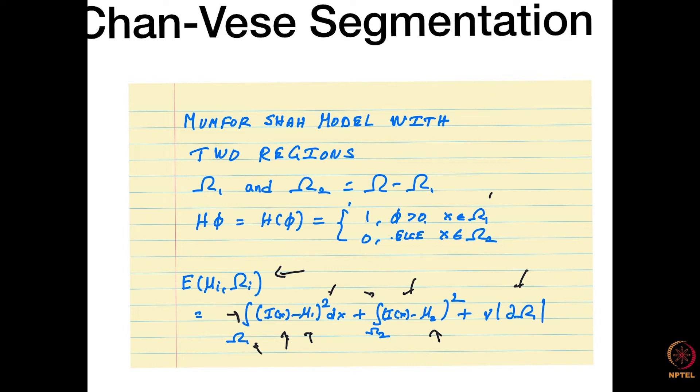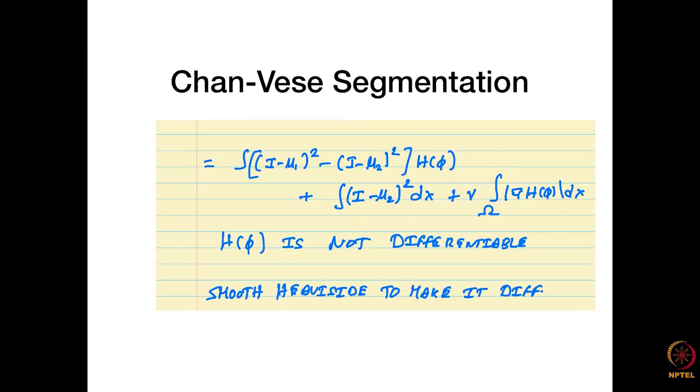We multiply it with the Heaviside functions. Now we know H of phi is 1 when phi(x) is greater than 0, and H of phi is 0 when phi(x) is less than 0. Depending on where x lies, these integrals would kick in. And of course, we can also approximate the length of the curve this way.